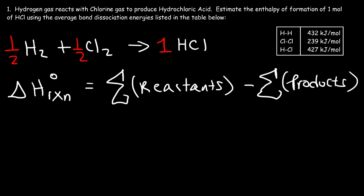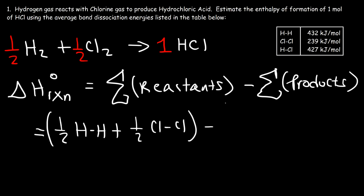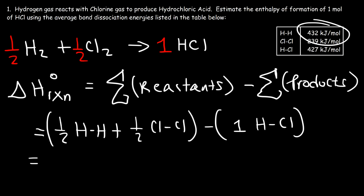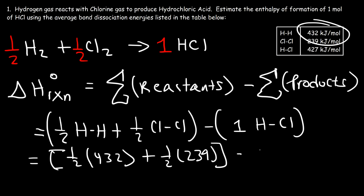For the reactants we have a hydrogen molecule, so we break the H-H bond, and we also break a Cl-Cl bond, each multiplied by the coefficient of one half. For the products we break one H-Cl bond. The energy required to break an H-H bond is 432 kJ/mol, so that's one half times 432. To break a Cl-Cl bond it's 239, and to break an H-Cl bond it's 427.